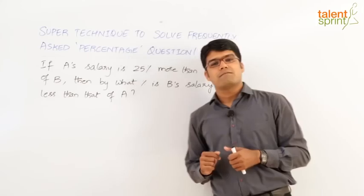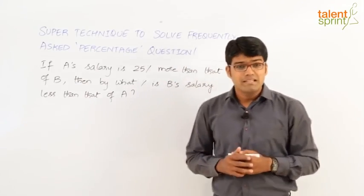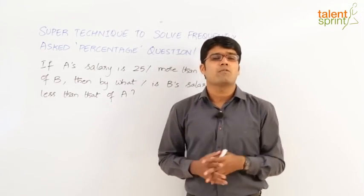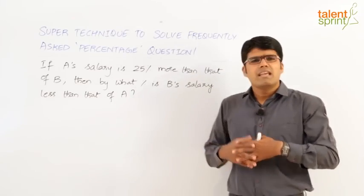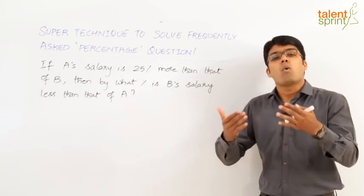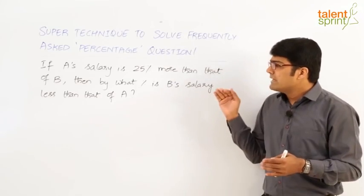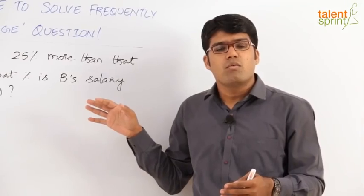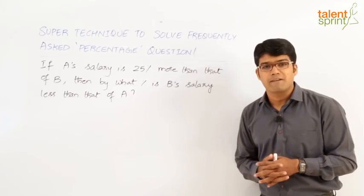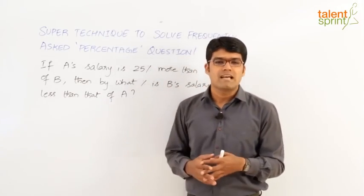Let us look at the question first. If A's salary is 25% more than that of B, then by what percentage is B's salary less than that of A? The question says A is 25% more than B and we need to find out B is what percentage less than A. Now, one of the answer options would definitely be 25% — in fact, the first option itself would be 25% because most students feel that 25% is the answer here.